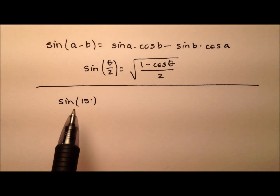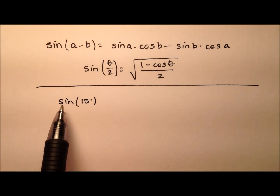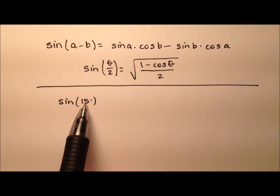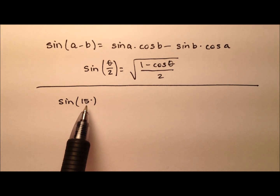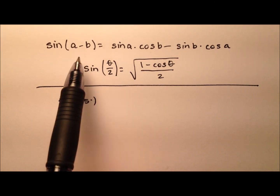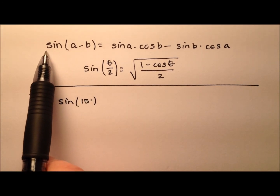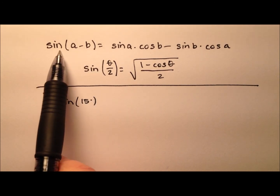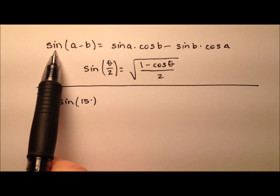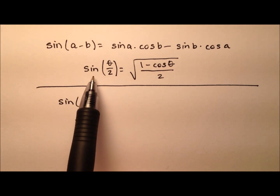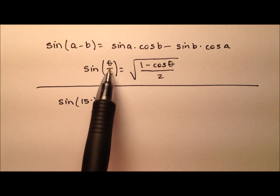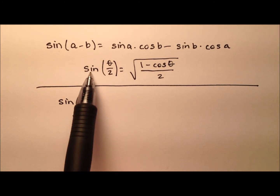In this example, I want to find the exact value for the sine of 15 degrees, and we're going to walk through this and do it two different ways. The first way is we're going to use the difference formula for sine, and then the second way is we're going to use the half angle identity for sine.